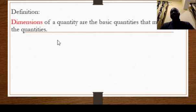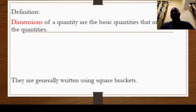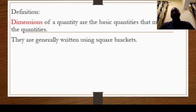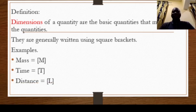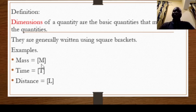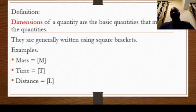A derived quantity depends on fundamental quantities. When you express a quantity in terms of its fundamentals, you are discussing dimensional analysis. Dimensions are represented using square brackets. For example, dimension of mass is [M], dimension of time is [T], dimension of distance is [L] — all capital letters. These are dimensions of base or fundamental quantities, and all other quantities depend on these three.